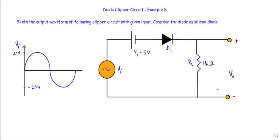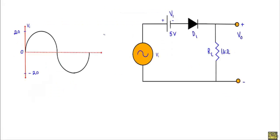This terminal is at higher potential and this terminal is at lower potential. In addition to the applied voltage vi, we have a bias voltage of 5 volt. When we have to sketch the output waveform of a clipper circuit and we have more than one voltage source, we start the circuit analysis by finding the transition voltage. This is a biased clipper circuit, and the transition voltage is the voltage for which the total circuit current will be equal to zero, separating the conducting and non-conducting states.